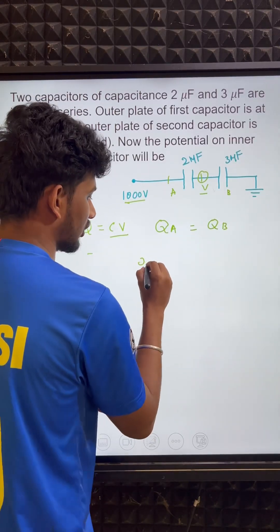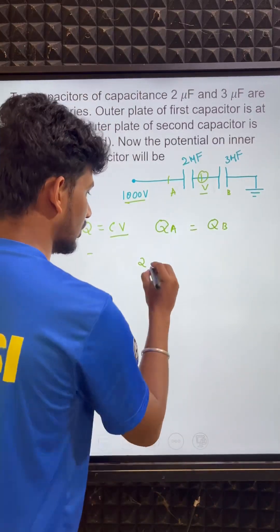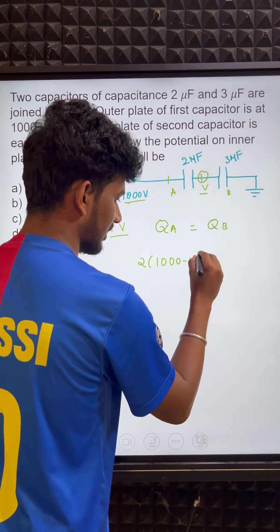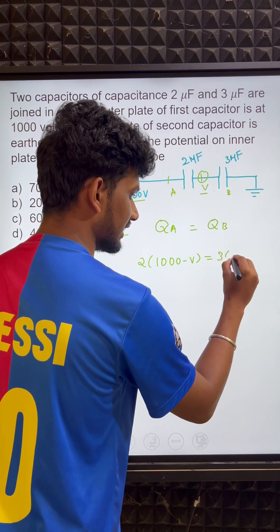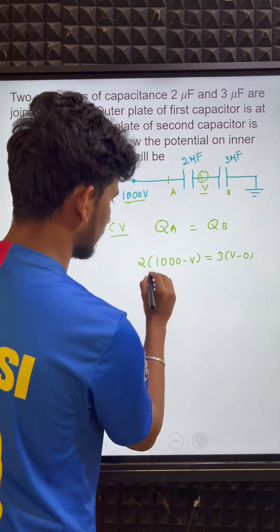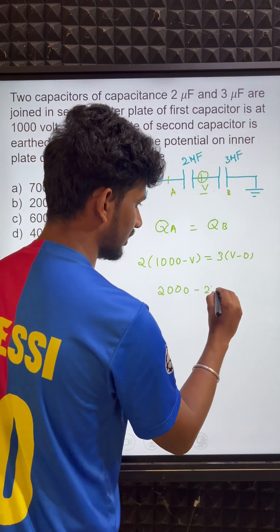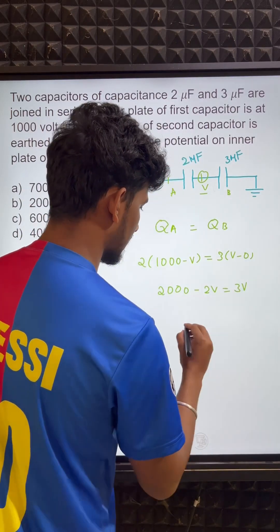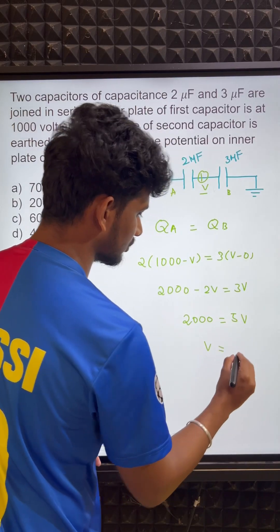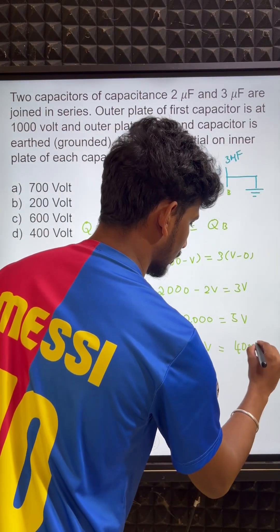Using Q = CV: the voltage across capacitor A is 1000 minus V, so Q = 2 µF × (1000 − V). The voltage across capacitor B is V minus 0 (grounded), so Q = 3 µF × V. Setting them equal: 2(1000 − V) = 3V, which gives 2000 − 2V = 3V, so 2000 = 5V, and V = 2000/5 = 400 V.